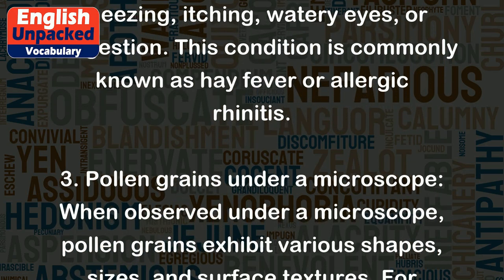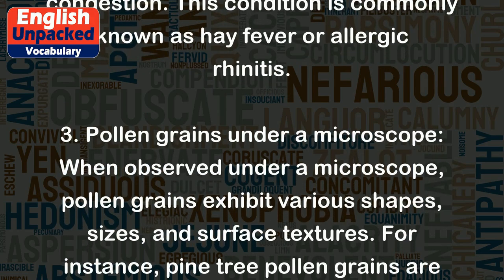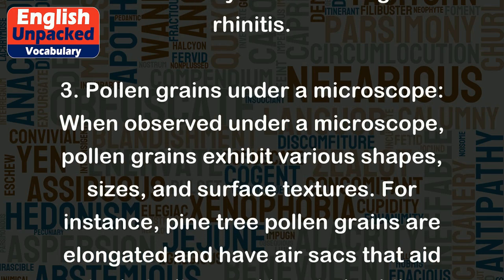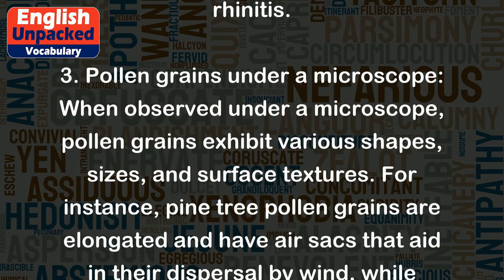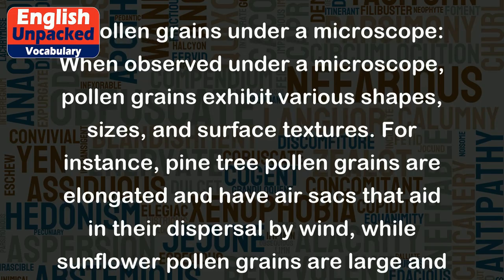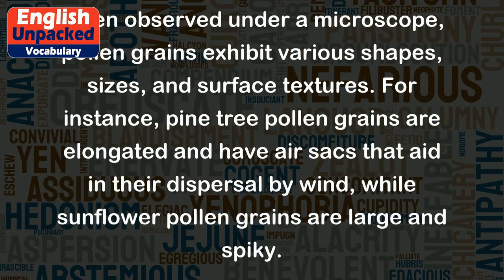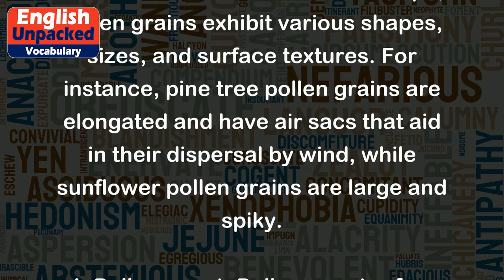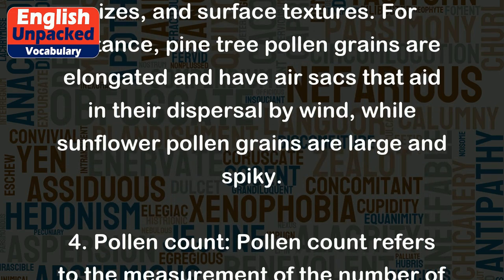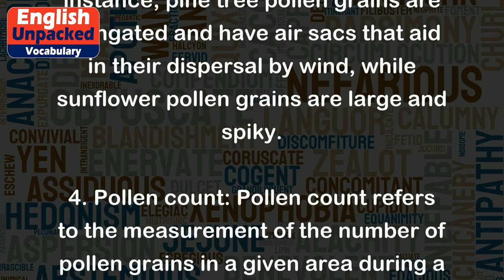3. Pollen Grains Under a Microscope. When observed under a microscope, pollen grains exhibit various shapes, sizes, and surface textures. For instance, pine tree pollen grains are elongated and have air sacs that aid in their dispersal by wind, while sunflower pollen grains are large and spiky.